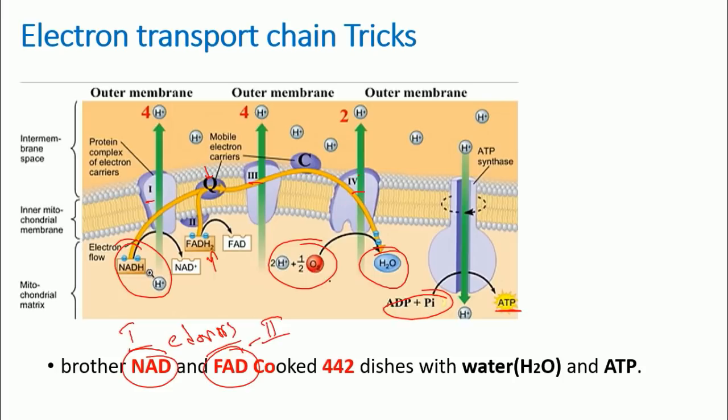NAD starts with complex one, FAD starts with complex number two. And then 'cooked,' so 'co' means in this case coenzyme Q. That's why I write 'co.' Coenzyme Q is a mobile electron carrier which will take that electron from NAD and FAD and deliver it to complex number three.